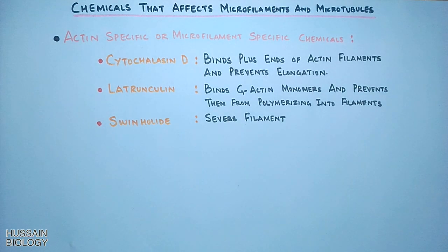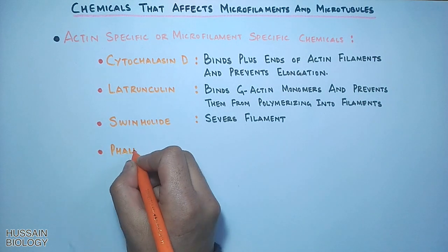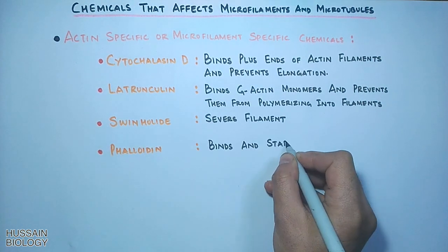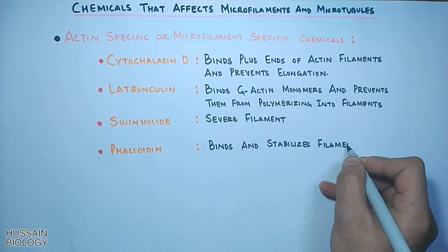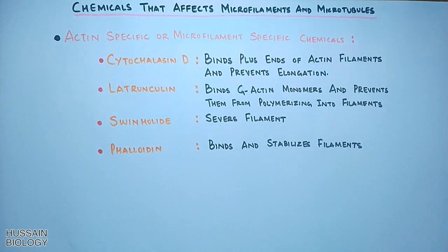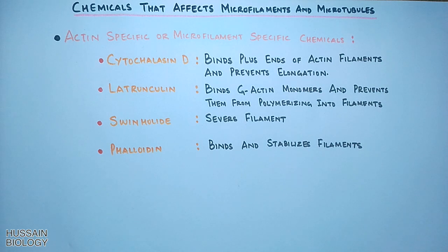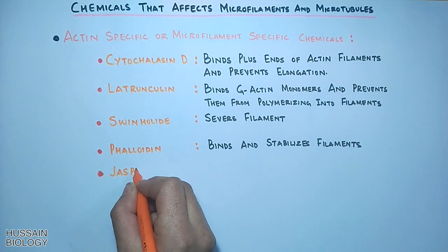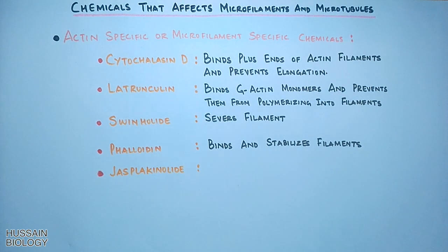Then we have Phalloidin — it binds and stabilizes filaments. This Phalloidin substance binds and stabilizes filamentous actin and effectively prevents the depolymerization of actin fibers.